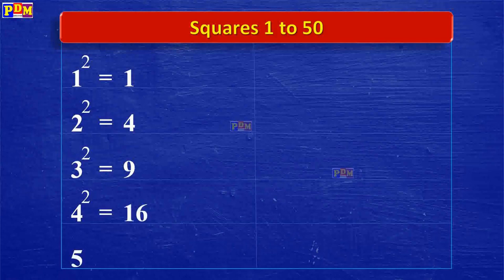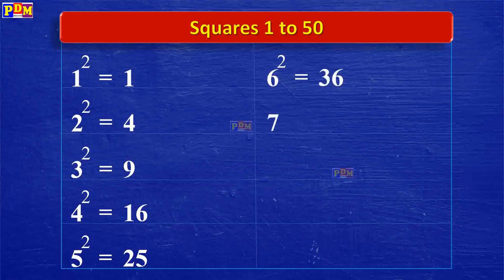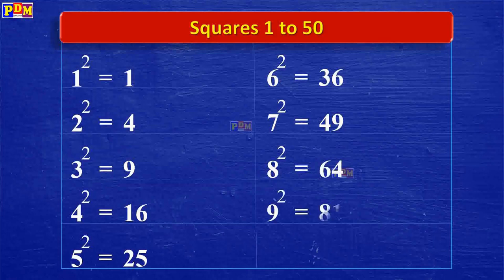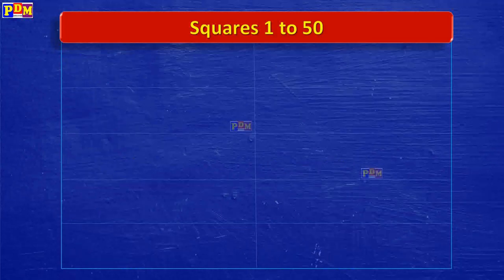5 squared is 25. 6 squared is 36. 7 squared is 49. 8 squared is 64. 9 squared is 81. 10 squared is 100. 11 squared is 121.